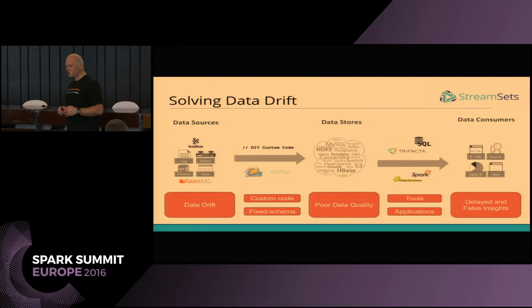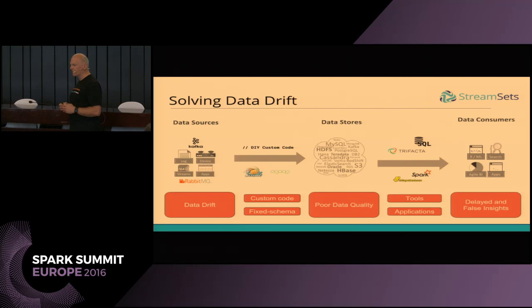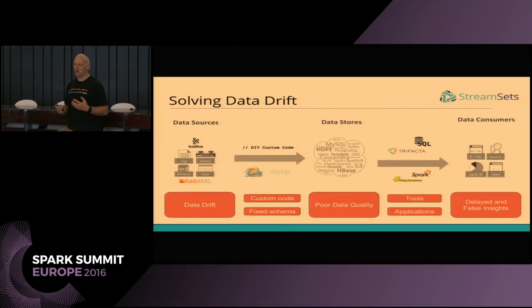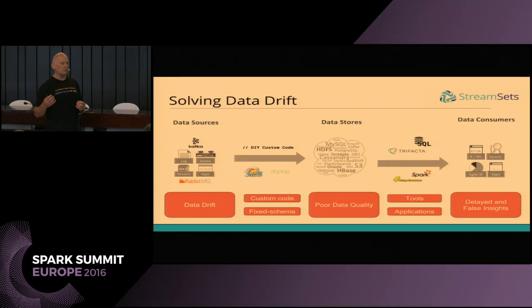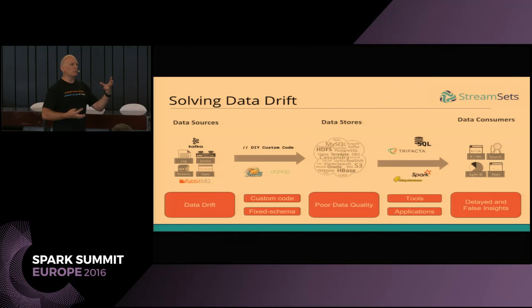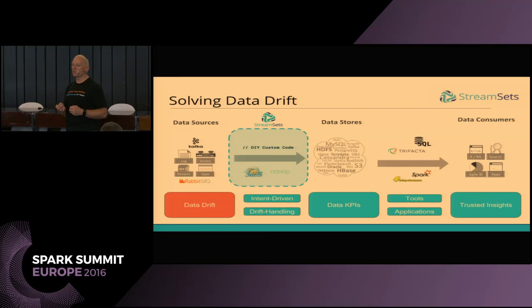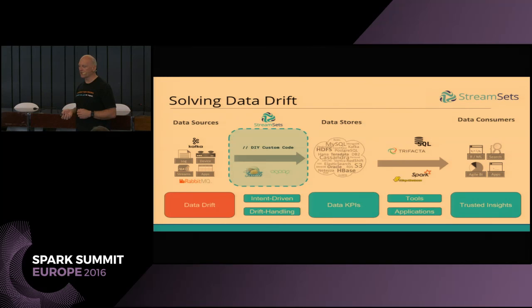This is a big picture of typical data flow through an enterprise now. We see a lot of custom code being used for ingest, as well as tools like Flume and Scoop. These approaches tend to rely on a fixed schema — this is where brittleness comes into the system. StreamSets was built to address this, to give a flexible way of ingesting data so that we can apply KPIs and have confidence in our data, so downstream analyses can actually be trusted.